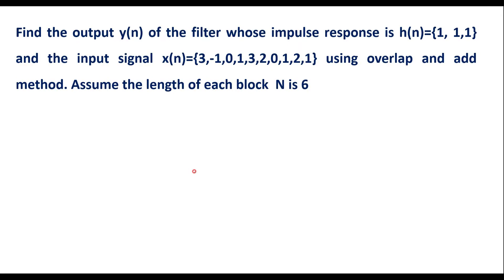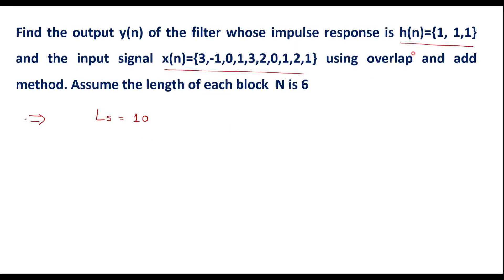In this video, let me consider one numerical on the overlap and add method. Find the output y[n] of the filter whose impulse response h[n] and input signal x[n] using the overlap and add method, assuming the length of each block N is 6. The input sequence x[n] has 10 samples, and h[n] has 3 samples, so M equals 3.